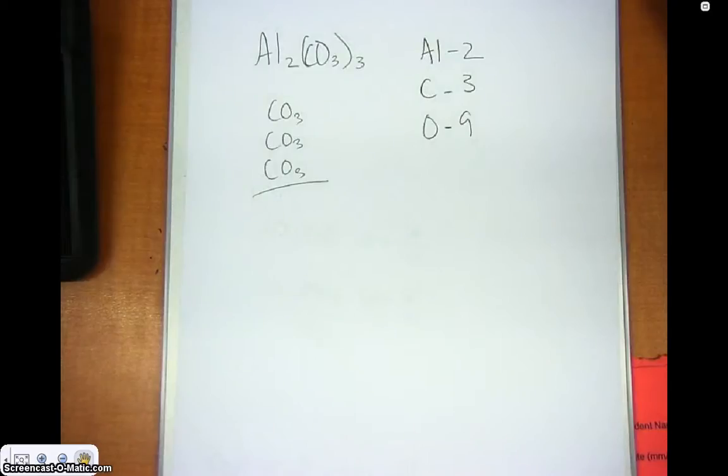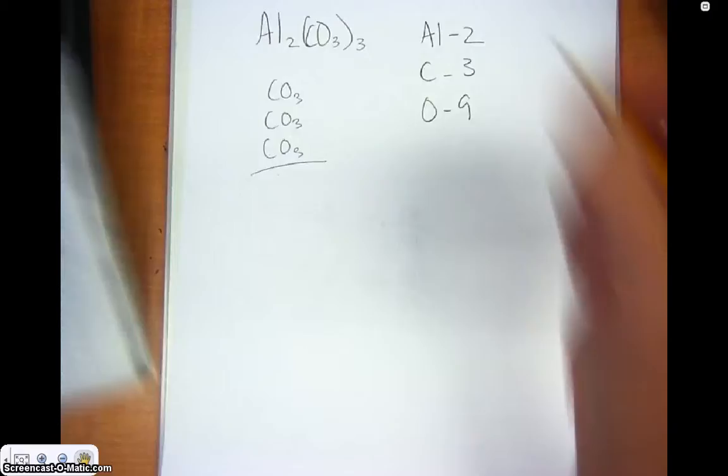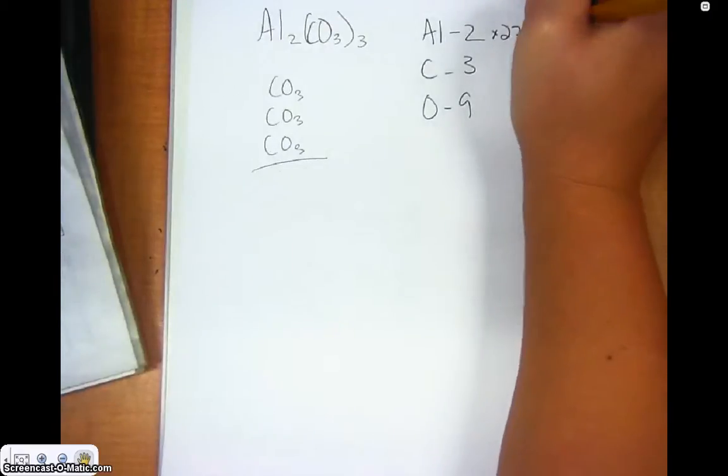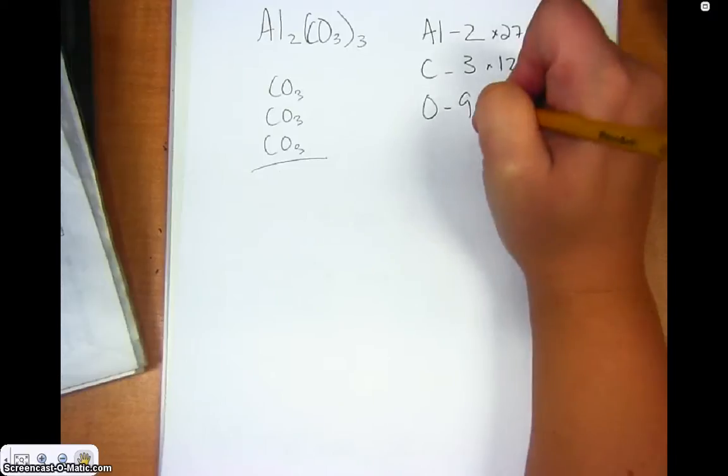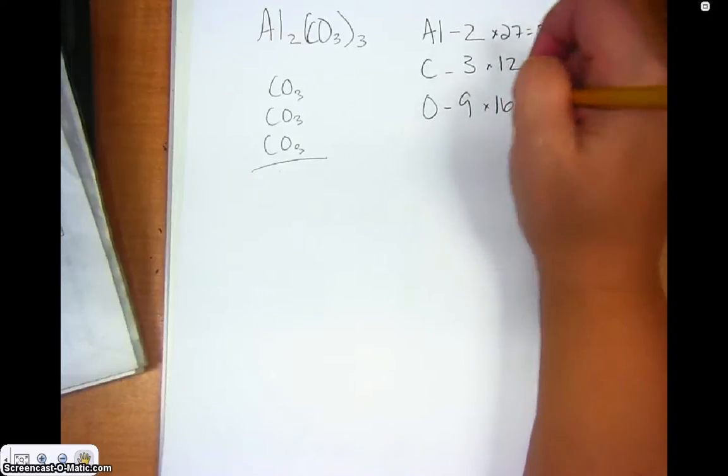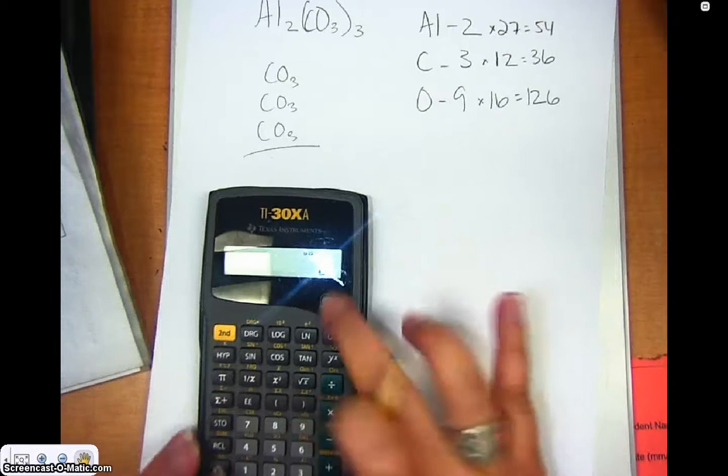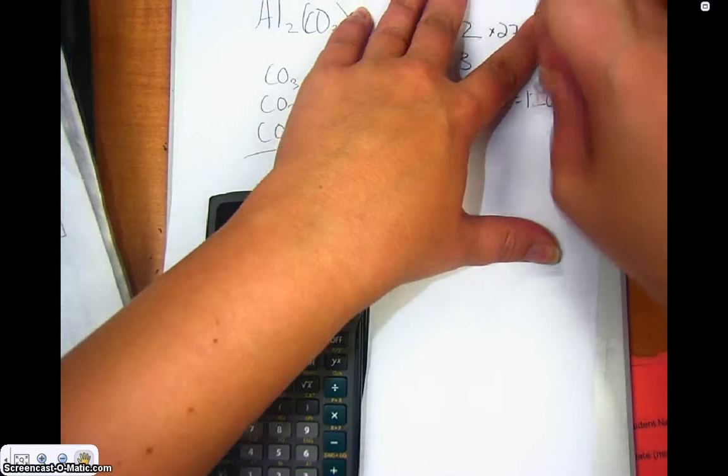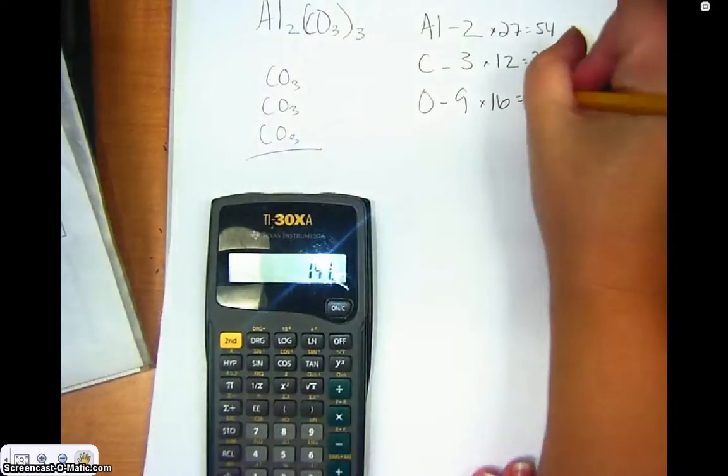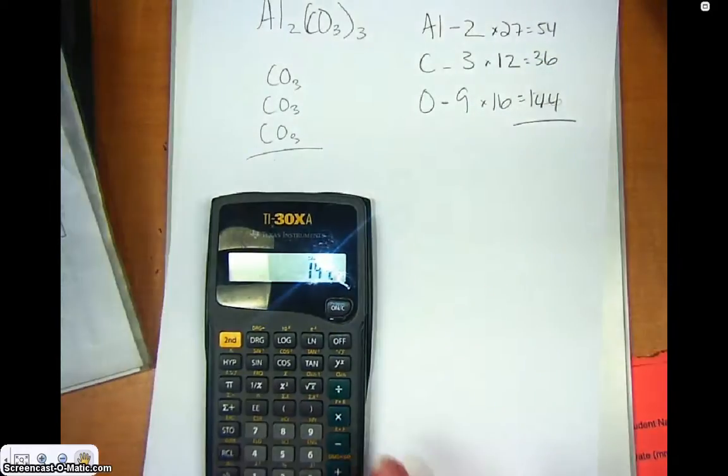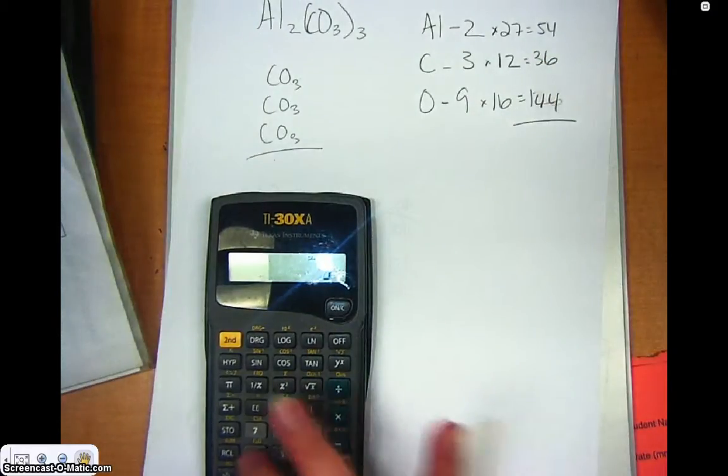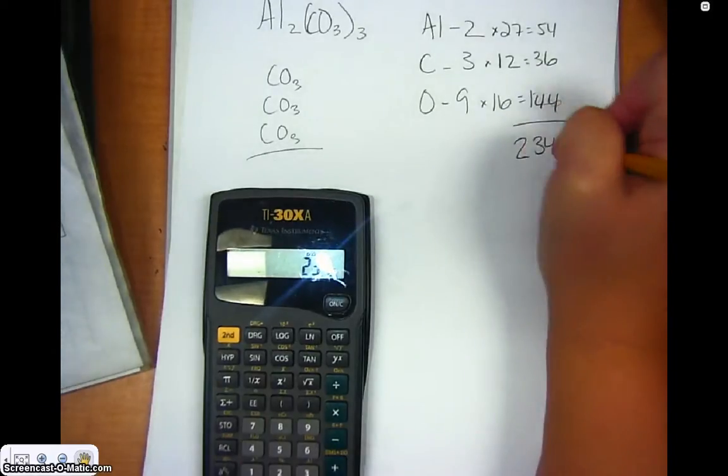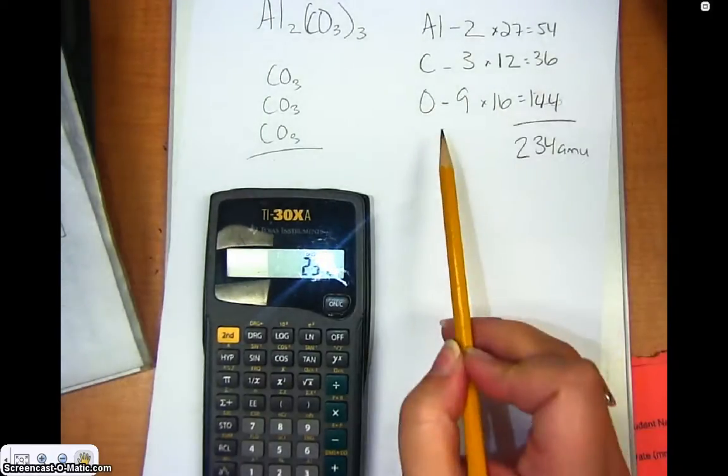And then, I'm just going to add up and see. So, aluminum is 27. That's 54. Carbon is 12. So, that would be 36. And oxygen is 16. So, let's now get this one. That's 144. Let me just double check my math there. I checked. And then, I'm going to add up the total. It's 234 atomic mass units in aluminum carbonate.